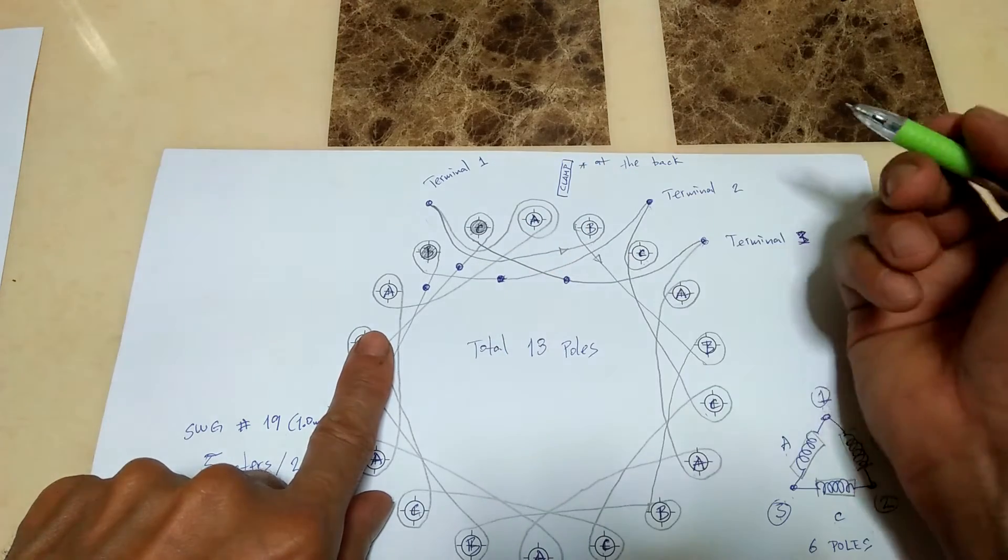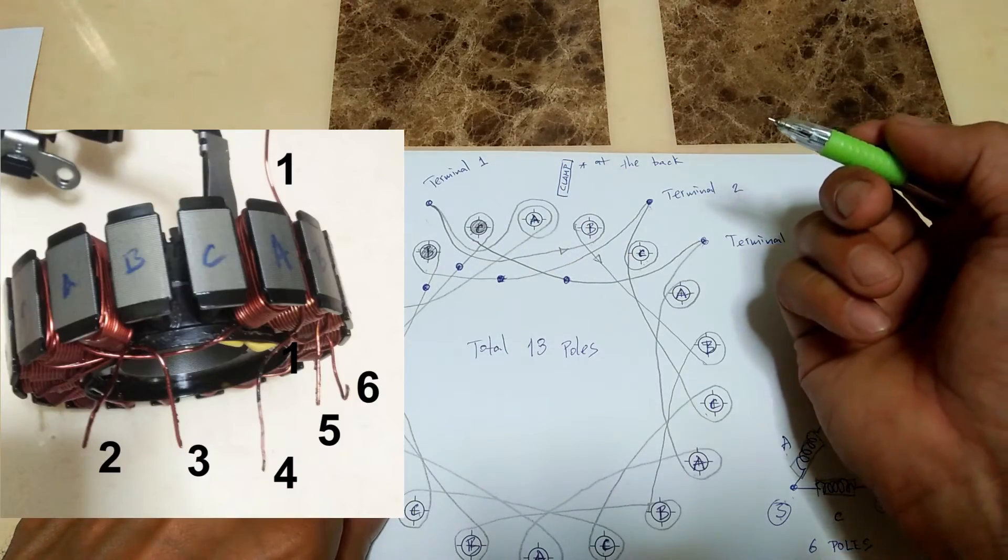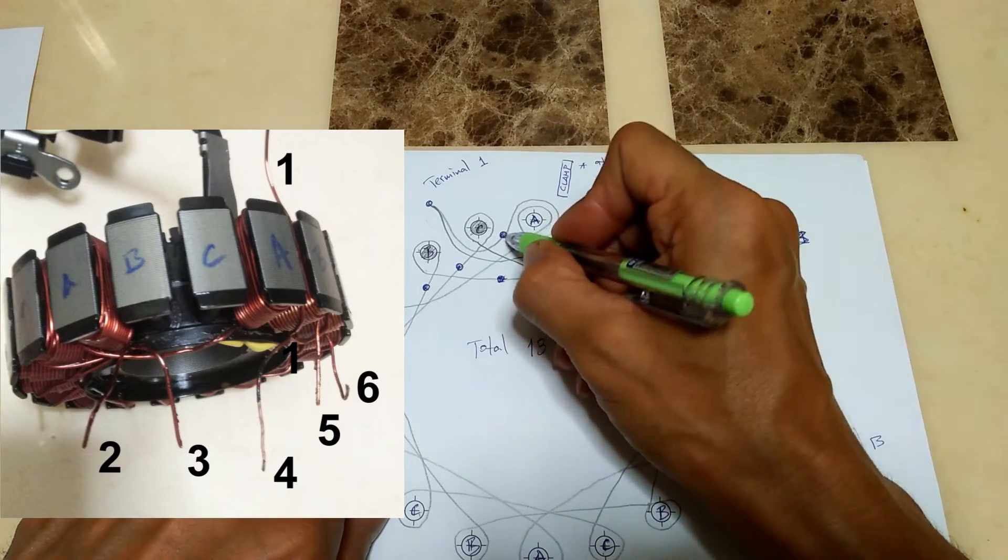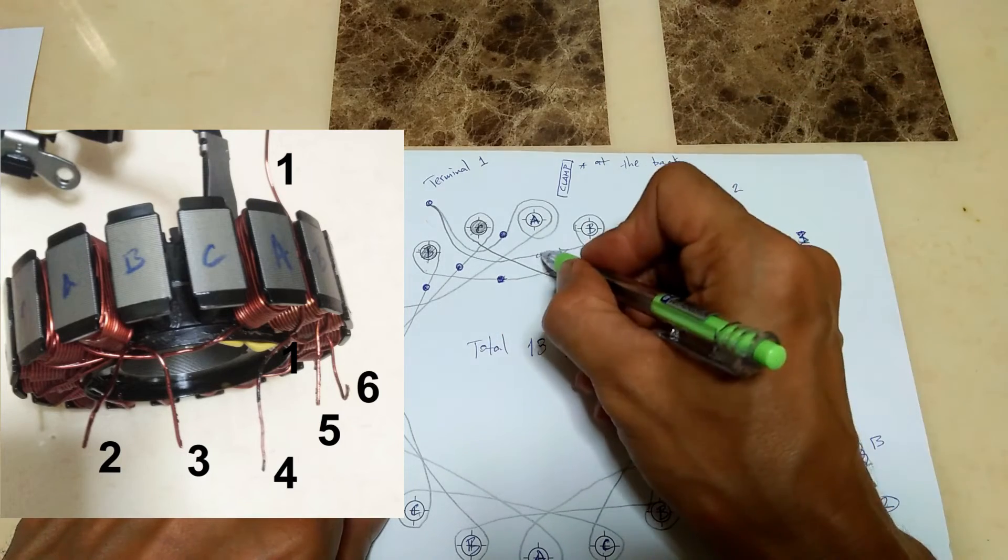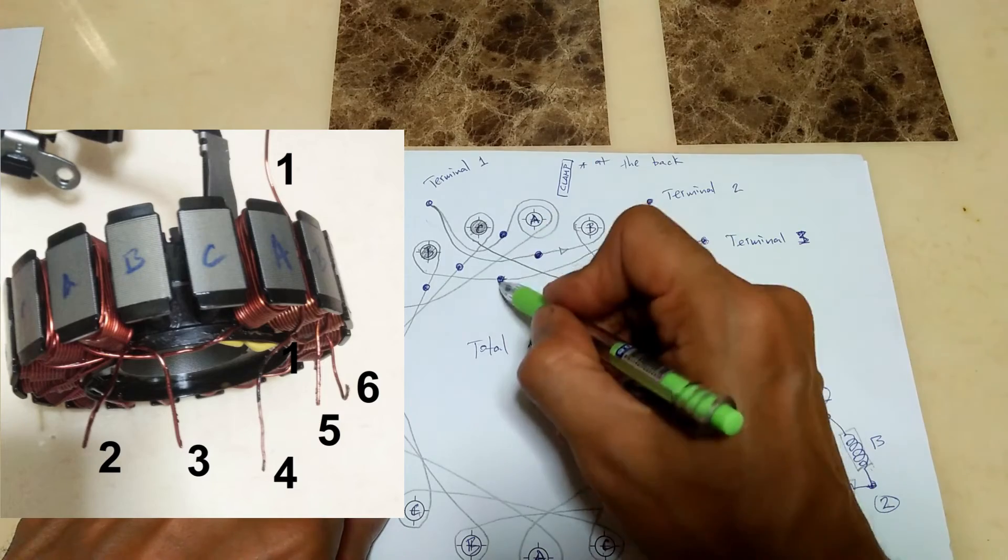These six dots in the diagram represent the six wire ends that I end up with after removing the old burned windings and prior to rewinding the two poles.